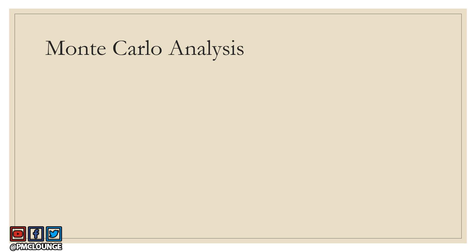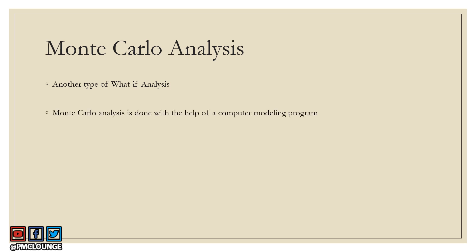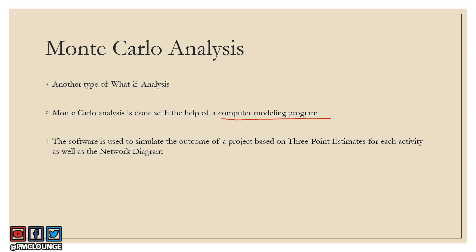The second tool is Monte Carlo analysis, which is also a type of what-if analysis. The key difference is that you're using a computer modeling program to perform the what-if analysis. This software simulates the outcome of a project based on three-point estimates for each activity as well as the network diagram. Three-point estimates are covered in the second link in the description — the schedule management knowledge area playlist.